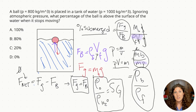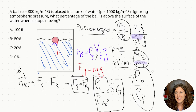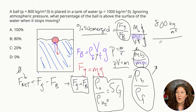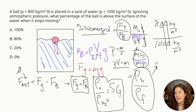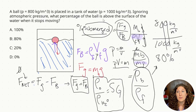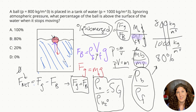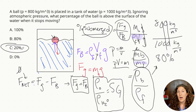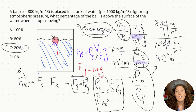Now let's do the math using our densities. We have 800 kilograms per meters cubed over 1000 kilograms per meters cubed. Cancel out the zeros — that gives us 8 over 10, or 80%. Remember, this is 80% submerged. But we're asked about the percentage of the ball above the surface, so if 80% is submerged, then 20% is above the surface. Our answer is C. As a general convention, put the object values in the numerator to calculate percent submerged, then subtract from 100% if asked about the percentage above the surface.